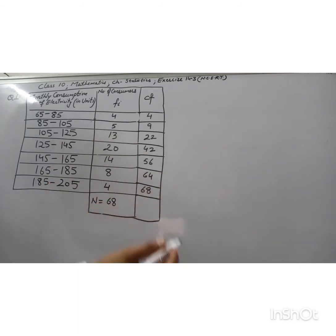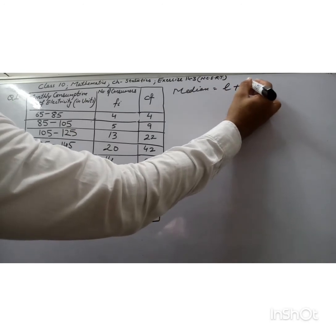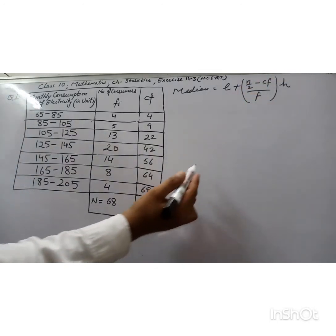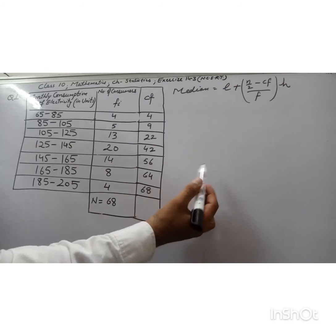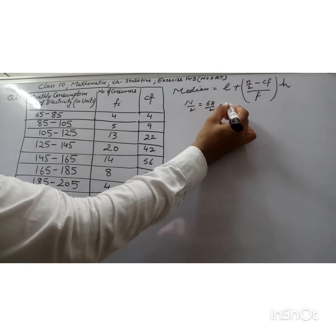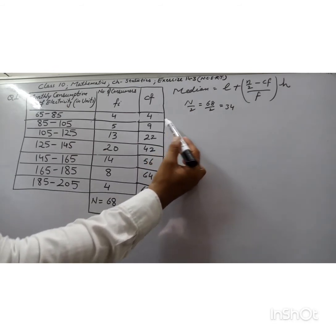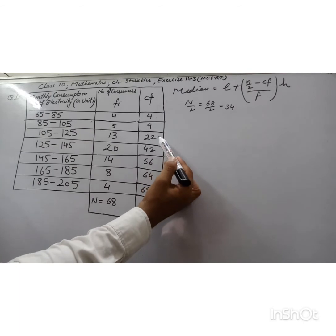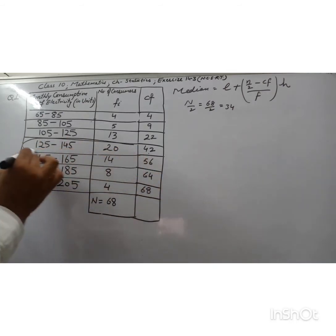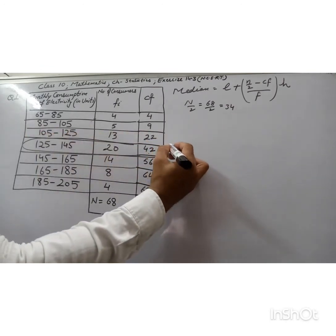The formula for median is: l + (n/2 − cf) / f × h. First we find the median class by computing n/2 = 68/2 = 34. We select the cumulative frequency that is just more than 34, which is 42. So the class corresponding to cumulative frequency 42 is our median class.